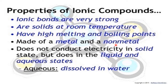Ionic compounds are made of a metal and a nonmetal — for example, sodium is a metal and chlorine is a nonmetal in sodium chloride. Ionic compounds do not conduct electricity in the solid state, but do conduct in the liquid and aqueous states. Electricity is the flow of charge, and in the solid state the ions are restricted from moving, so passage of current is not possible. In the liquid state, when ions become free they can move and carry charge, which is why they conduct electricity.